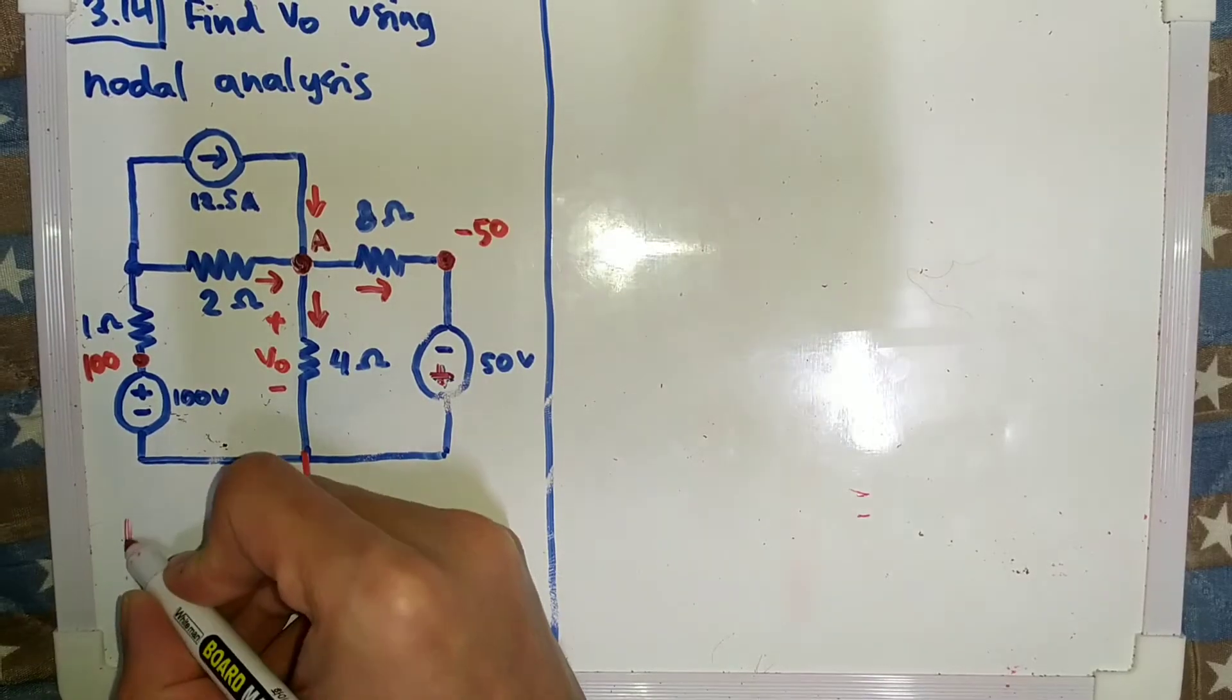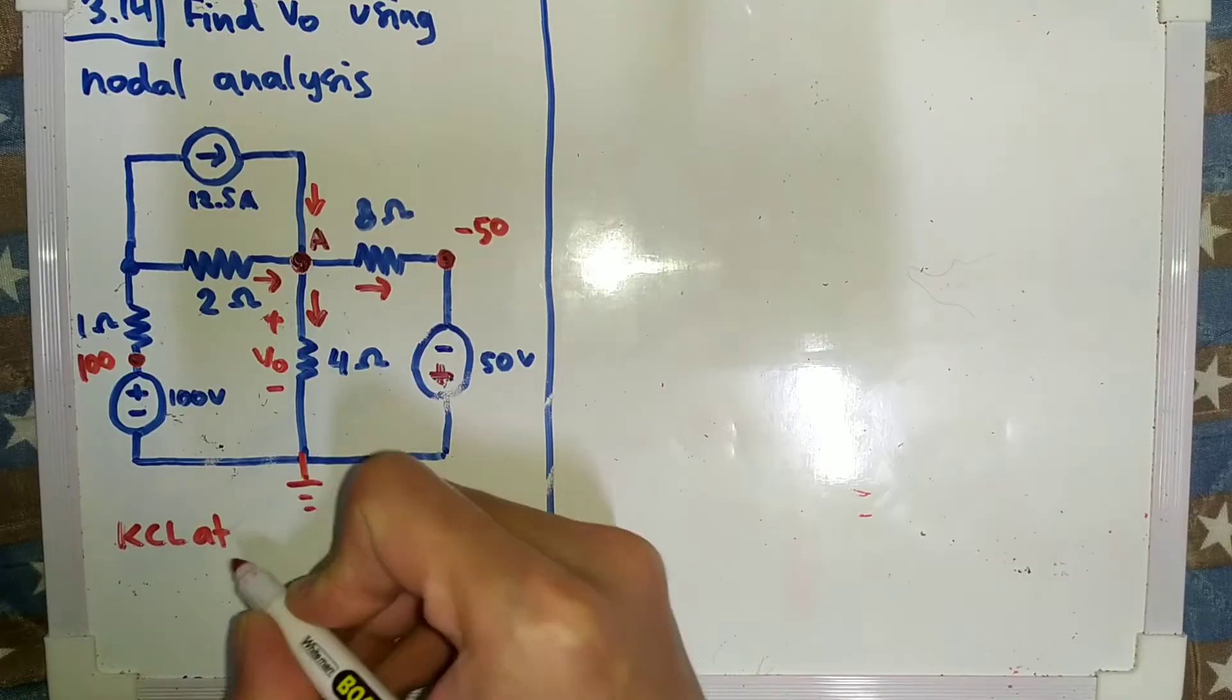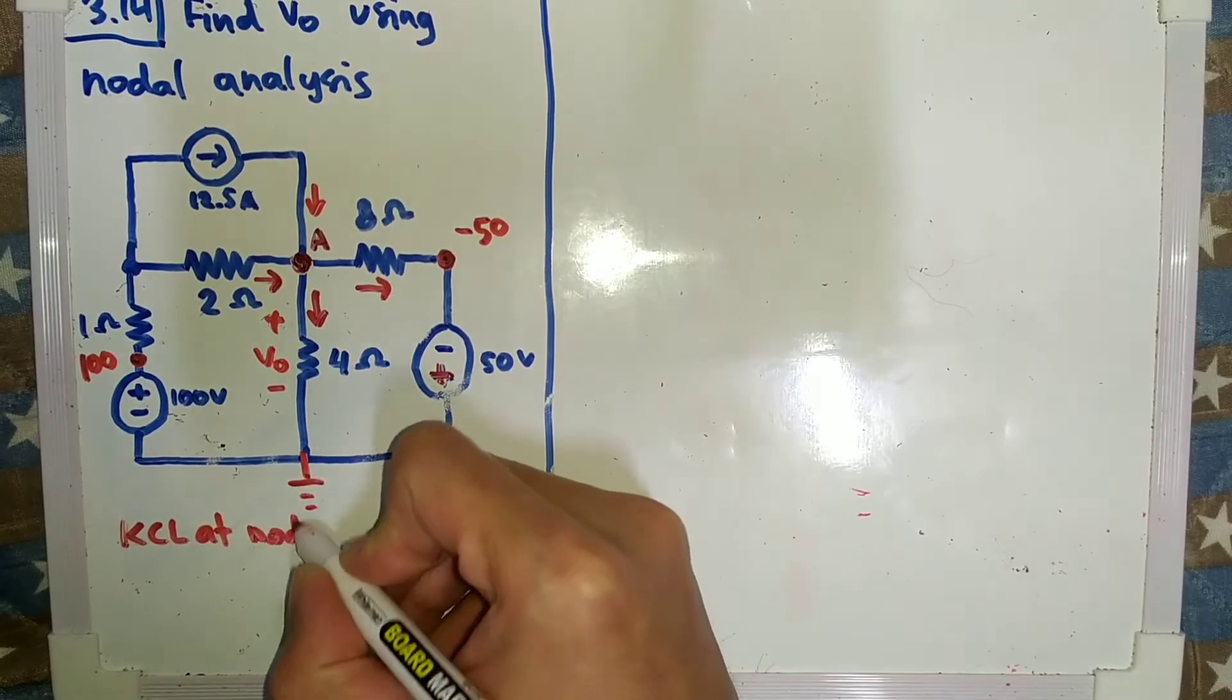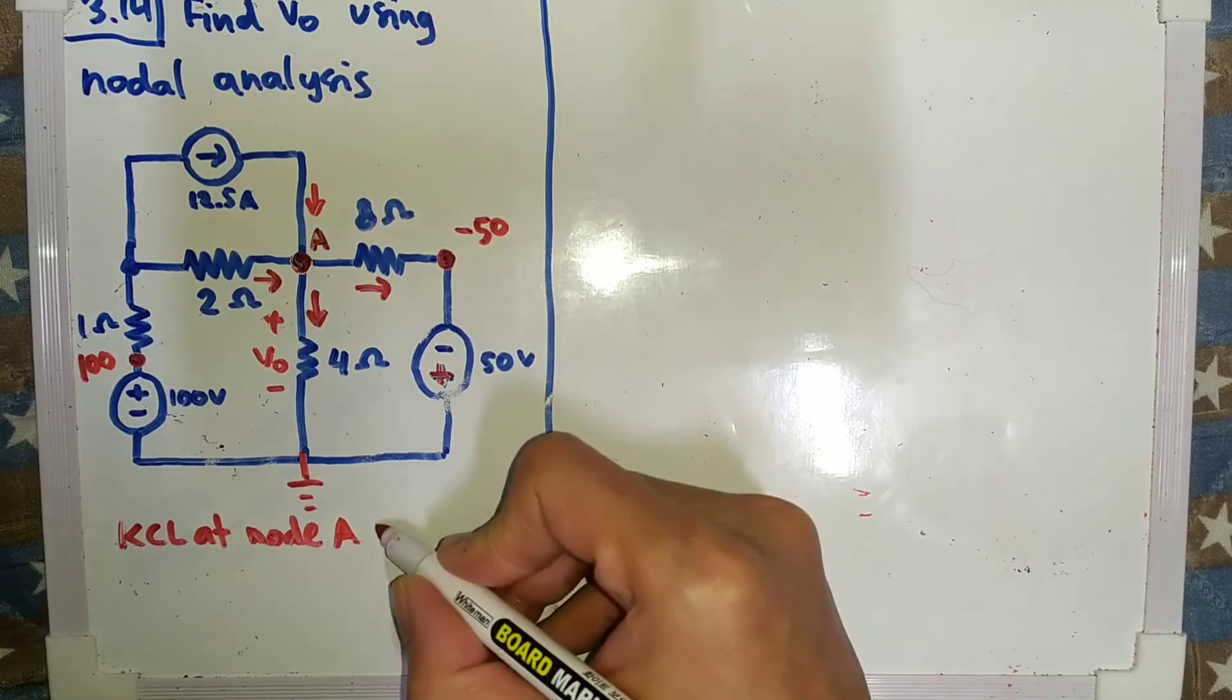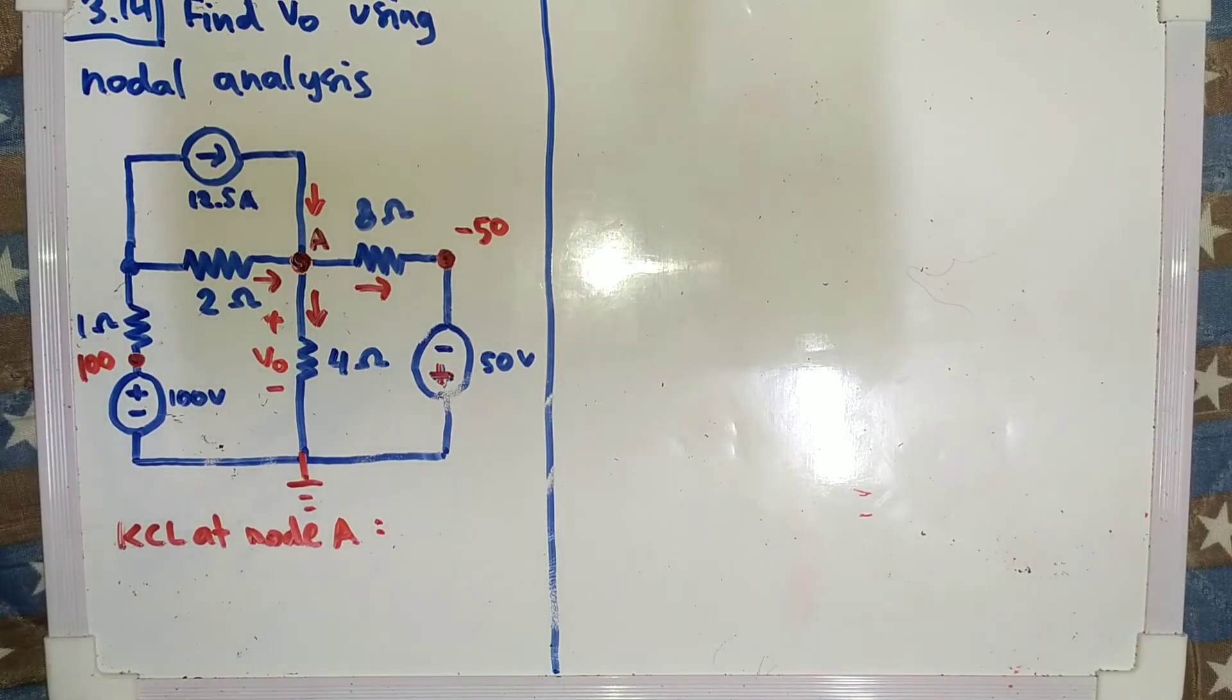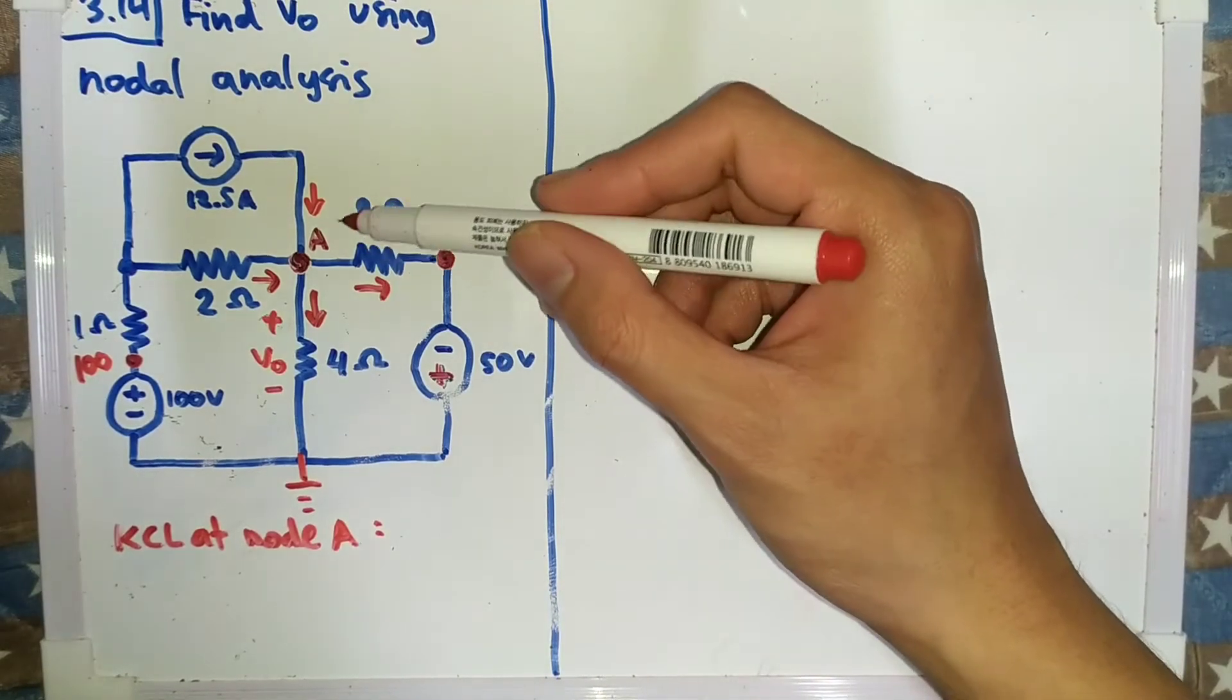Let me take a look at node A. We have the current that goes in is equal to the current that goes out.